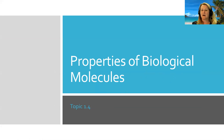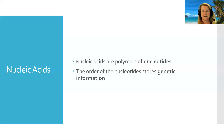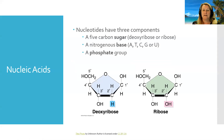Let's start with nucleic acids. Nucleic acids are polymers, or big long chains of nucleotides, and the order of those nucleotides stores the genetic information in the cell. All nucleotides, whether they're in DNA or RNA, have three components: a five-carbon sugar, a nitrogenous base, and a phosphate group.